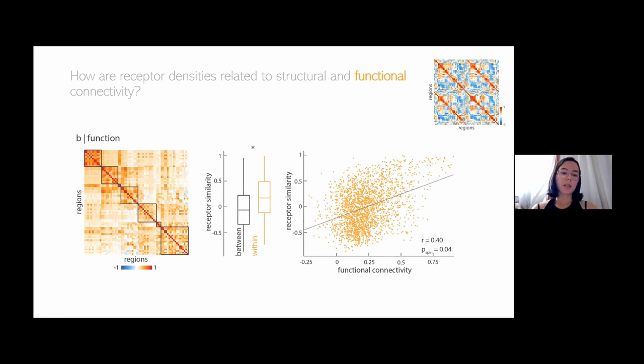That's kind of interesting also, because if you have similar receptor distributions, it makes sense that you would be firing similarly and therefore have similar functional outputs and be contributing to similar functional networks, doing similar things.